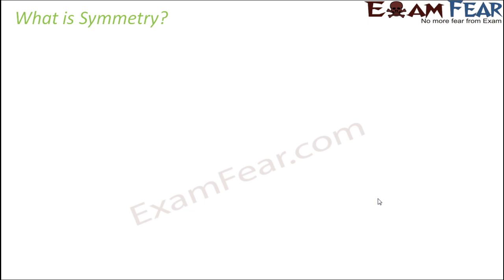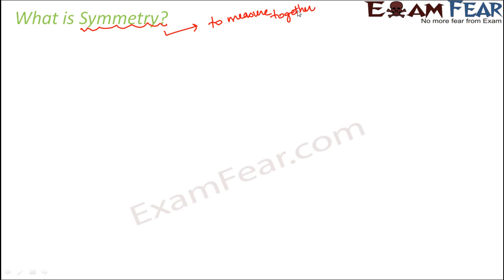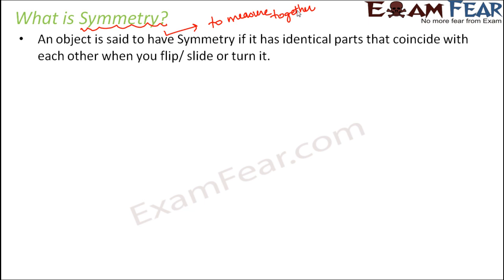What exactly is symmetry? If you talk about the origin of this term, symmetry is a Greek word which means 'to measure together.' You might wonder why it is called that — it's because whenever we talk about symmetry, we talk about different parts of one object. Measuring together means measuring the different halves of the object together, combining them to form one object. An object is said to have symmetry if it has identical parts that coincide with each other when you flip, slide, or turn the object in some way.